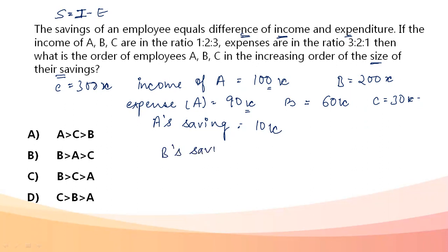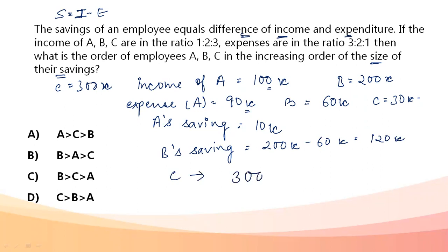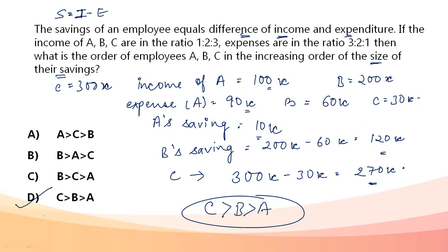B's saving is 200X minus 60X, which becomes 140X — wait, 200X minus 60X equals 140X. Actually: B = 200X − 60X = 140X and C = 300X − 30X = 270X. The person who saved the most is C, followed by B, then A. The answer is option D: C, B, A.